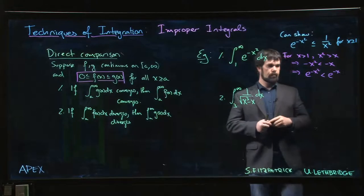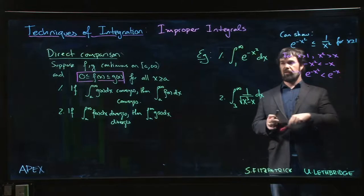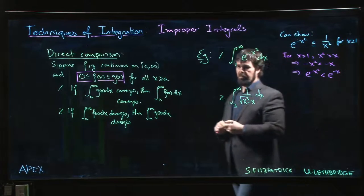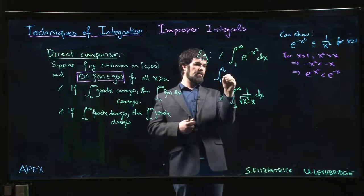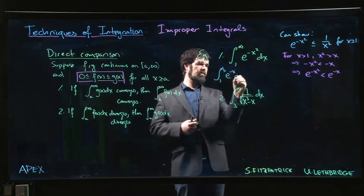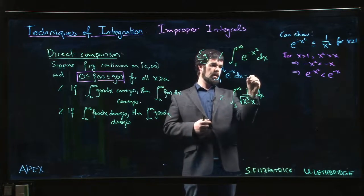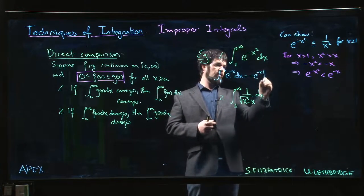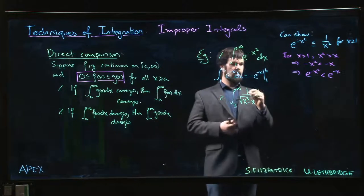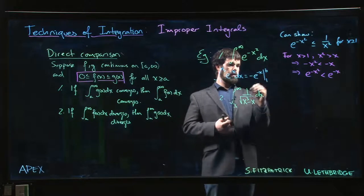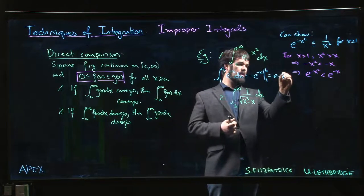And if we could establish convergence of the integral for e to the minus x, we'd be in business. But we know that for the integral from 1 to b of e to the minus x dx, this is going to be minus e to the minus x from 1 to b. So it's going to be e minus e to the minus b.